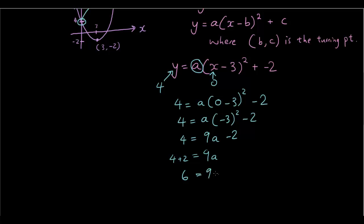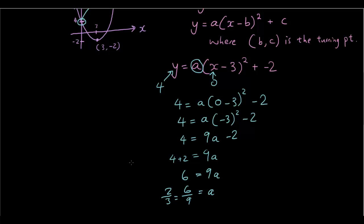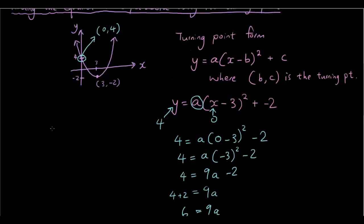6 equals 9a so a equals 6 divided by 9, which is 2 over 3. So therefore the equation of this parabola is y equals 2 over 3 bracket x minus 3 squared minus 2.